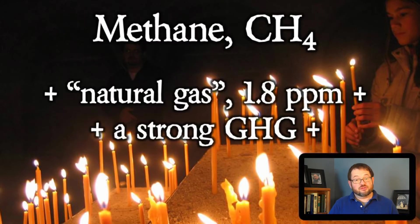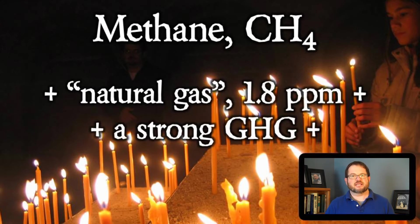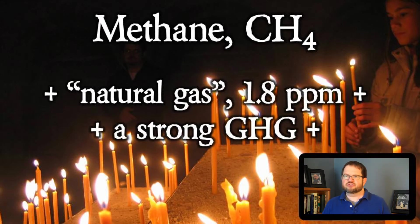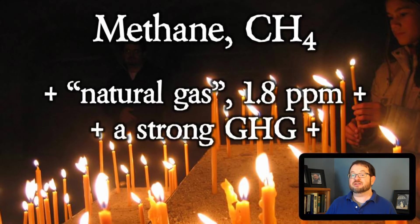Our next atmospheric constituent that is also a strong greenhouse gas is methane. The chemical symbol for methane is CH4 — one carbon atom hooked to four hydrogen atoms. Methane is what we call natural gas. If you have a gas stove, gas heat, or a gas hot water heater, that natural gas is methane. We extract it from the ground, trapped in layers of shale deposits. At the present time, the concentration of methane in the atmosphere is about 1.8 parts per million.